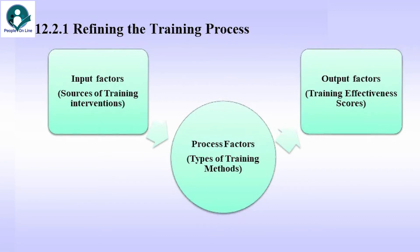Refining the Training Process. We see a process diagram over here. On the left, we have the input factors — basically, the sources of training interventions would be captured here. Then we have in the middle the process factors, the types of training methods which are being used. And then we have the output factors: training effectiveness scores.